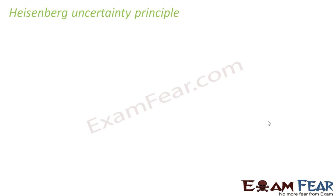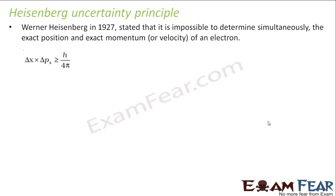I have discussed it in one of our previous lessons when we were talking about dual nature. So let's have a quick review. In somewhere around 1927, Heisenberg stated that it is impossible to determine simultaneously the exact position and exact momentum of an electron.